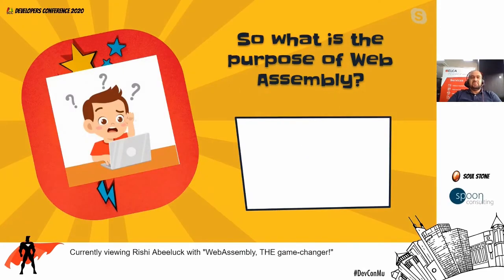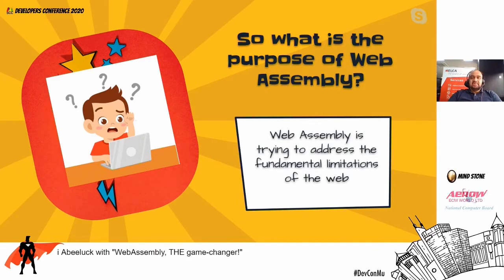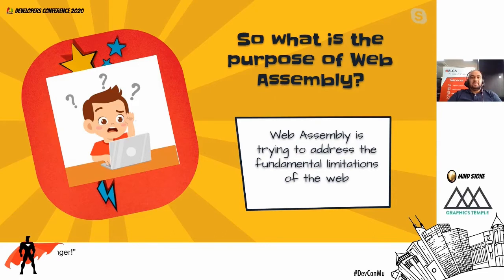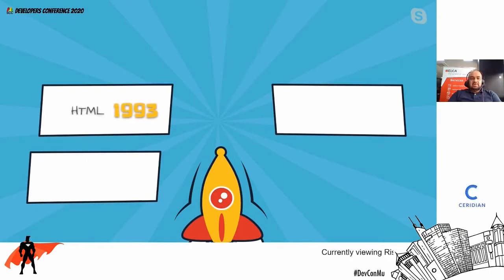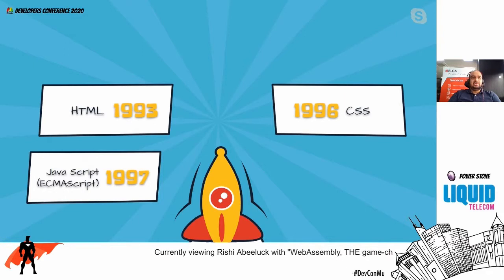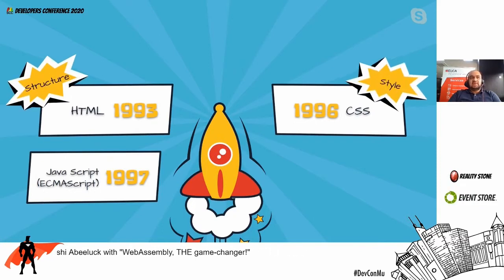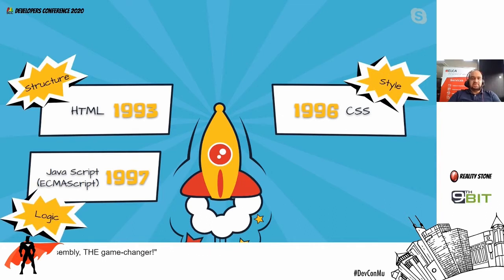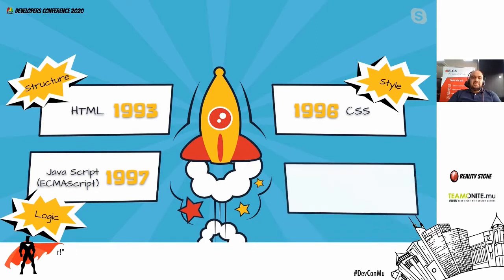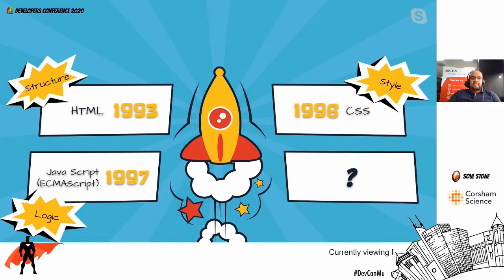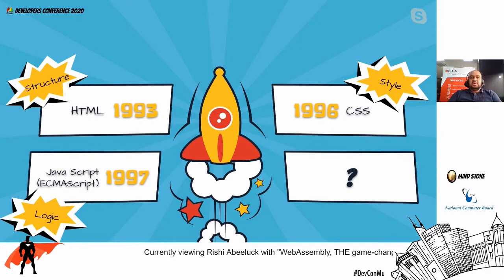The purpose of Web Assembly is to address the fundamental limitations of the web. To understand these limitations, consider what web technologies consist of: HTML was introduced in 1993, CSS followed within three years, and ECMAScript (JavaScript) version 1 was released in 1997. We had structure, style, and logic — but nothing fundamentally new has been added to the open web standard since then.